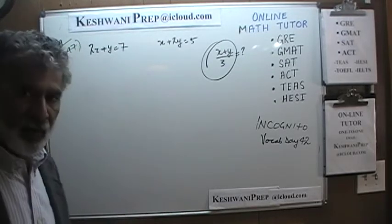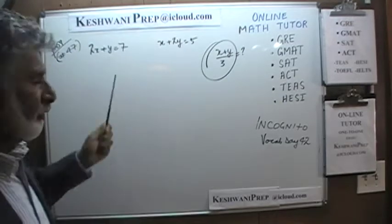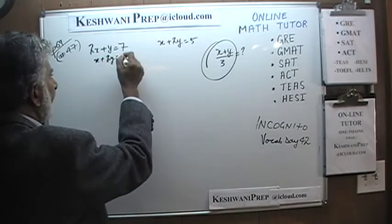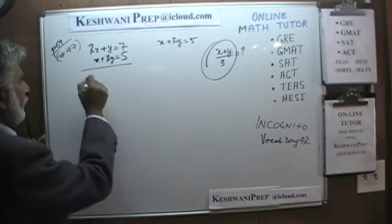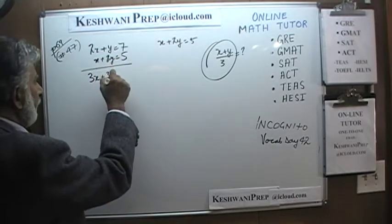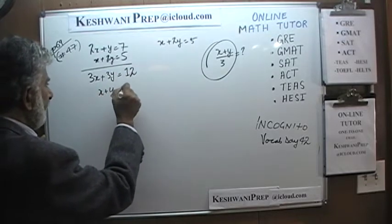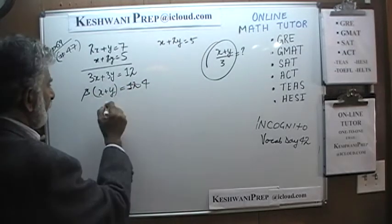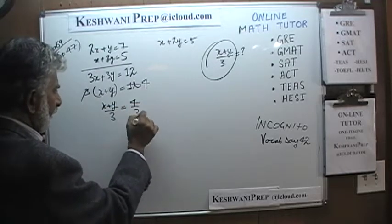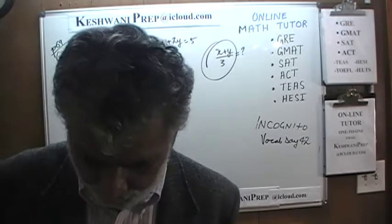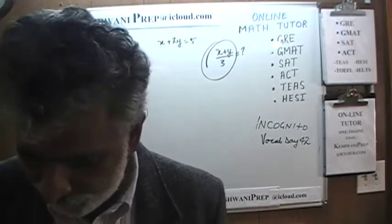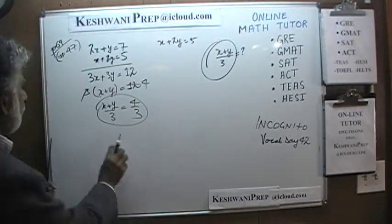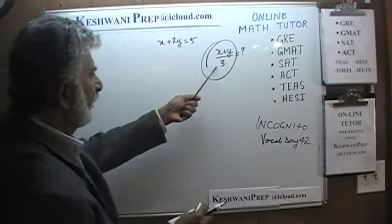So that's what we're going to try here. Let's add the two equations. We write x plus 2y equals 5 underneath. When we add them, we find that 3x plus 3y equals 12, which means x plus y equals 4. So x plus y divided by 3 is simply 4 divided by 3. We do not have to find x and y individually — it's just a waste of time.